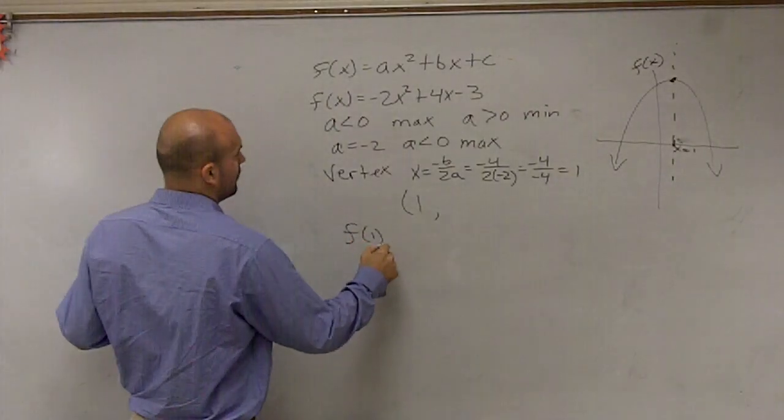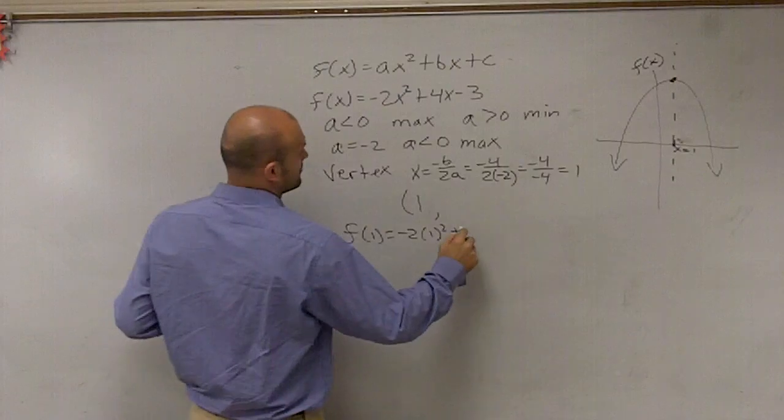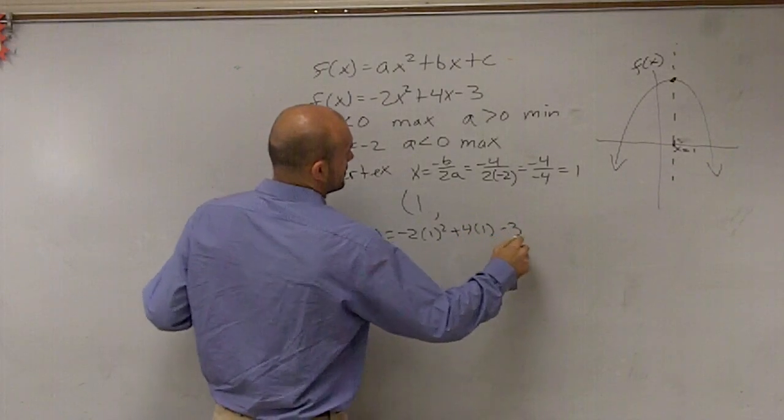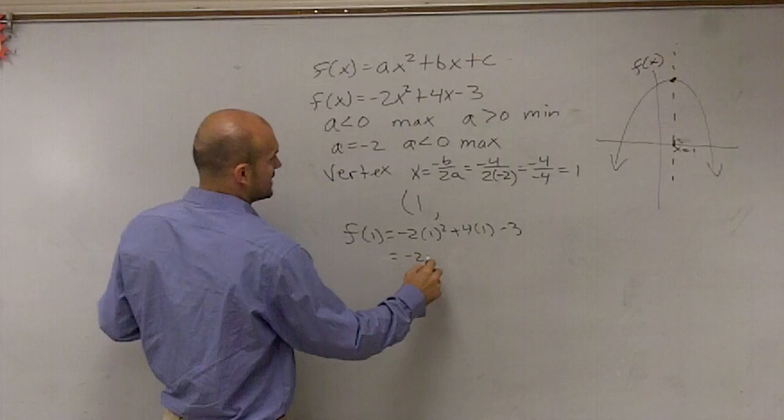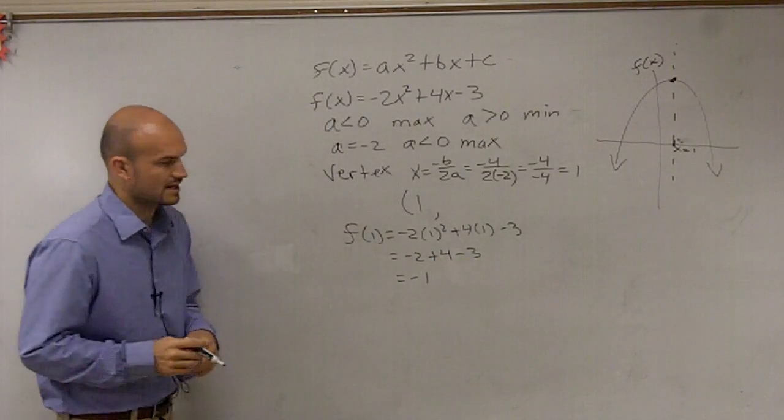So you do f of 1 equals negative 2 times 1 squared plus 4 times 1 minus 3. So that equals negative 2 plus 4 minus 3, which equals negative 1.